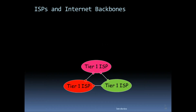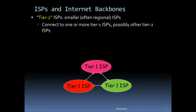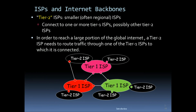Tier two ISPs are smaller, often regional ISPs, connected to one or more tier one ISPs and possibly other tier two ISPs. In order to reach a large portion of the global internet, a tier two ISP needs to route traffic through one of the tier one ISPs to which it is connected.